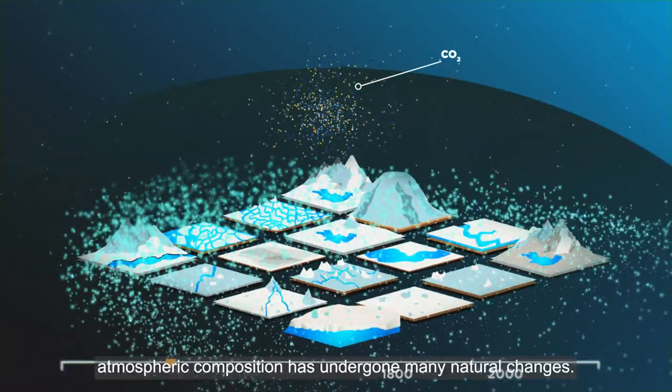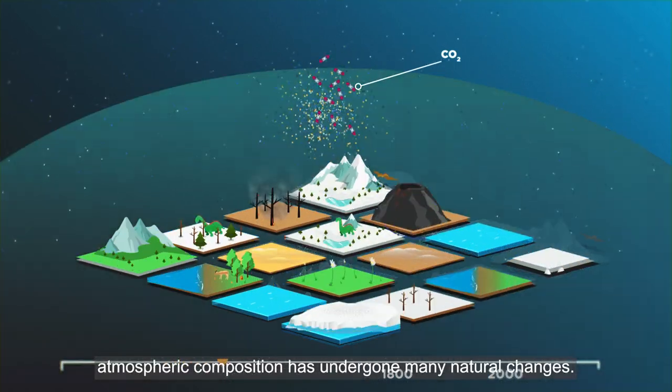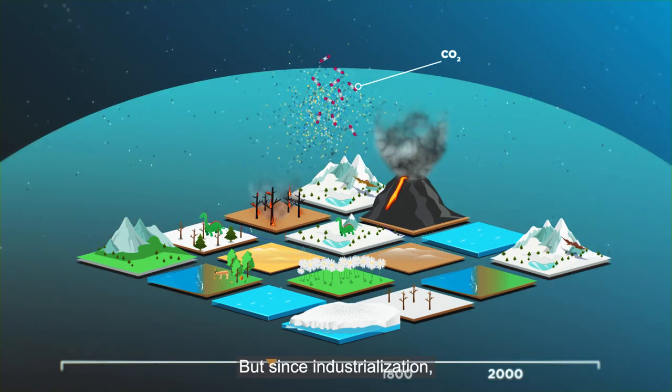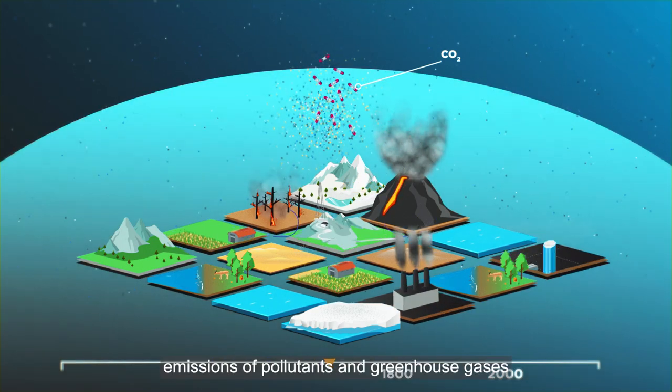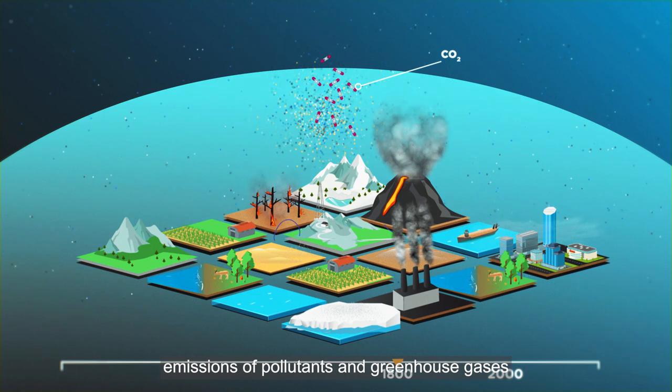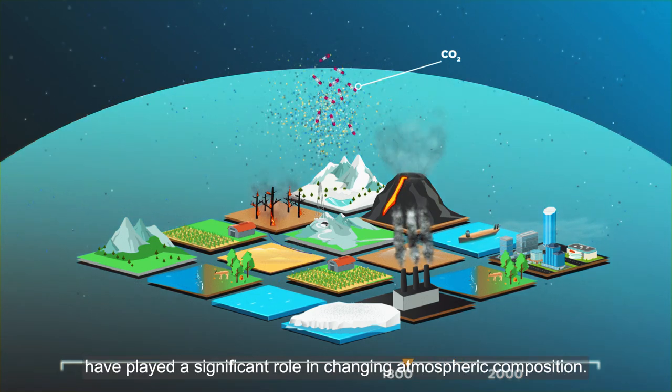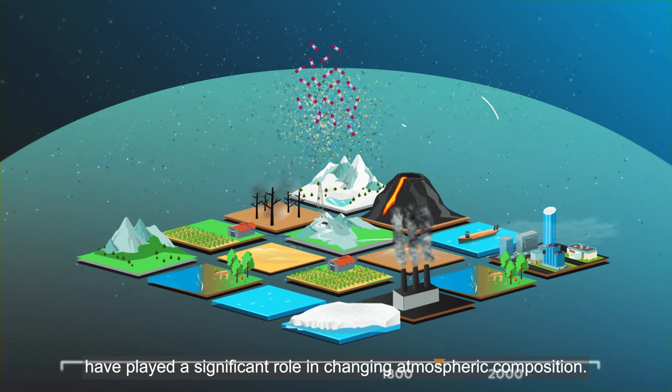As Earth has evolved, atmospheric composition has undergone many natural changes. But since industrialisation, emissions of pollutants and greenhouse gases from human activities have played a significant role in changing atmospheric composition.